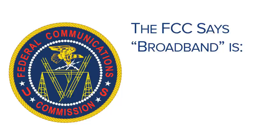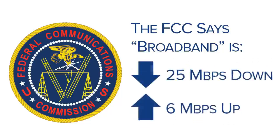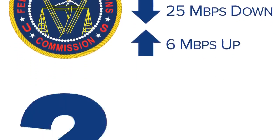Let's look at some formal definitions of broadband, including the technology behind it. The federal government has a number to define broadband: 25 megabits per second on the downlink. There's another number associated with that: 6 megabits per second on the uplink. These are the speeds the government says qualify something as broadband, but your broadband internet provider at home and your broadband cellular carrier probably don't provide those speeds today.